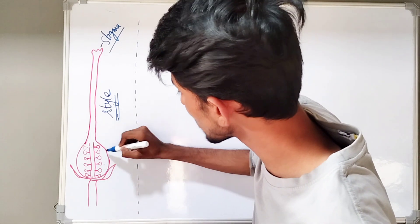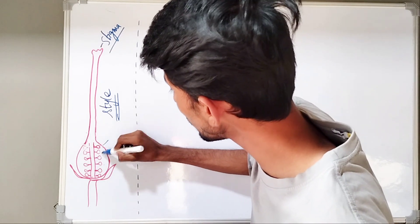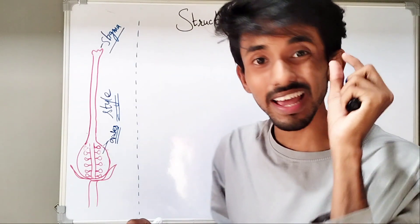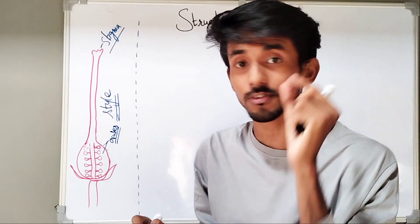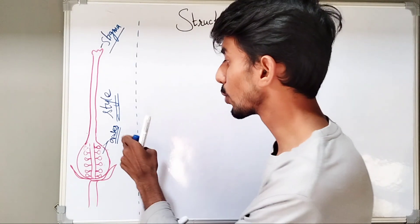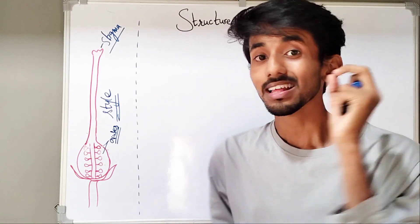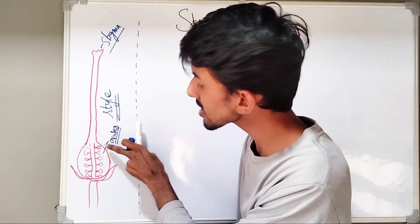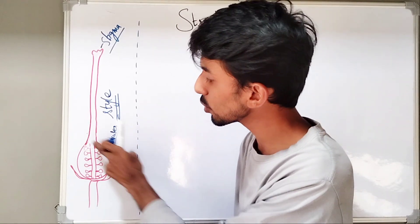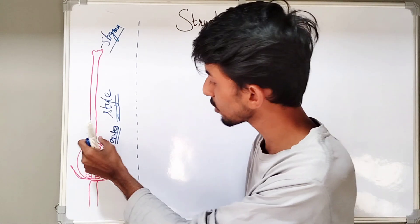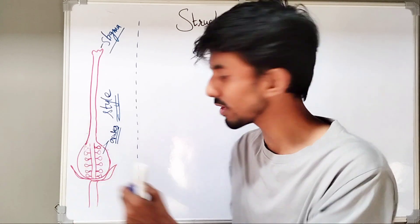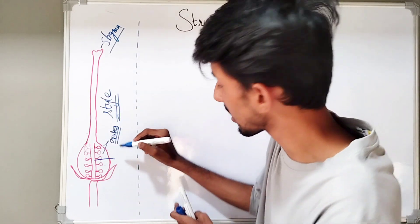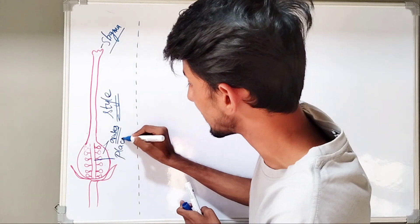You can see these particle-like structures — these are the ovules. Inside the ovule, the egg cells or the female gametes are produced. Today, we are going to see the structure of that one ovule. But before that, the ovules are connected to a special tissue in the ovary. This tissue to which all the ovules are connected is called as the placenta.